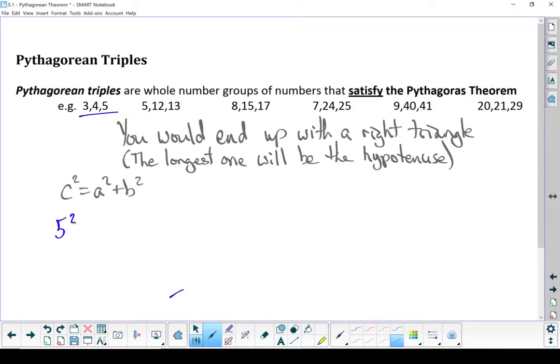5 squared, because that's the longest one, equals 3 squared plus 4 squared. 25 equals 9 plus 16. 9 plus 16 gives me 25. Yes, that's a Pythagorean Triple. It even works with bigger numbers.